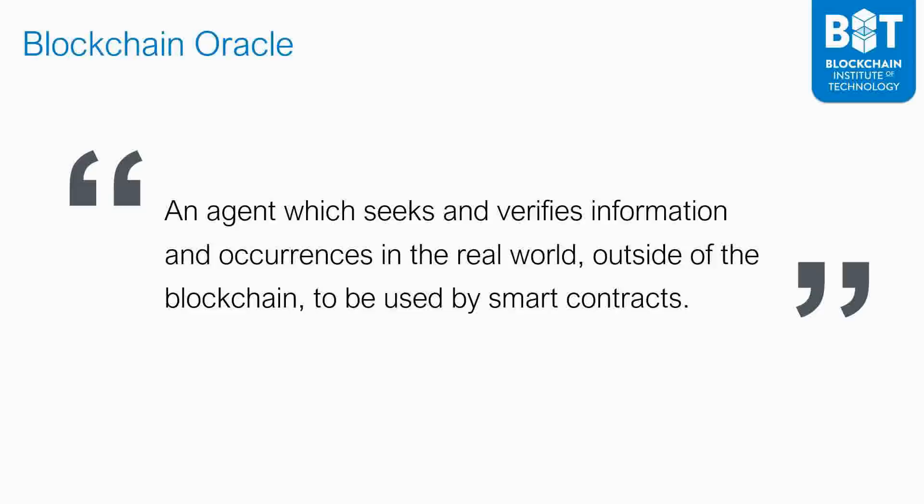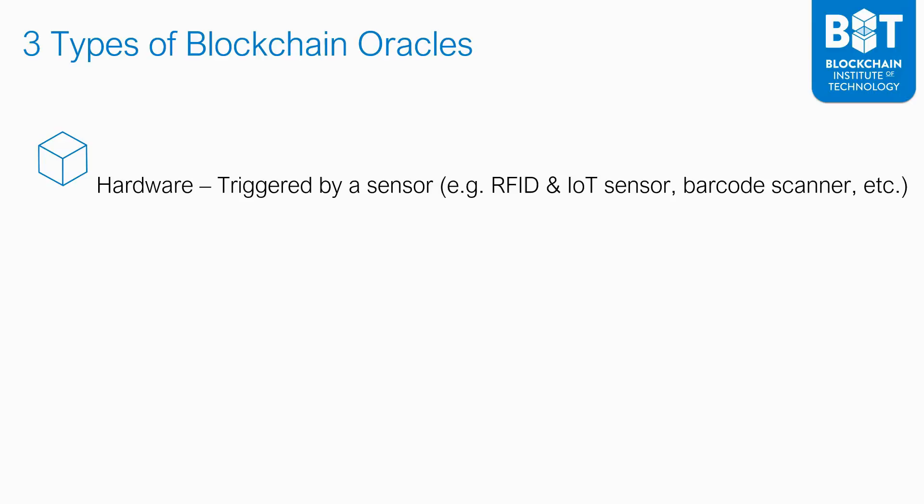Let's talk about the three types of blockchain oracles. The first type is hardware. These are different triggers that are triggered by a sensor — it could be a radio frequency ID sensor, an Internet of Things sensor, or a barcode scanner, etc.